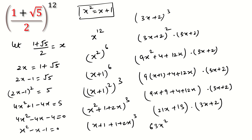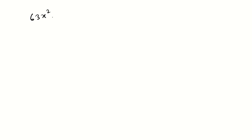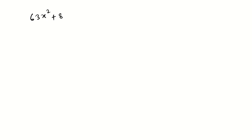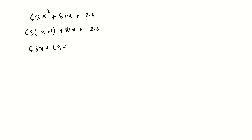Multiplying out: 21x × 3x = 63x², 21x × 2 = 42x, 13 × 3x = 39x, 13 × 2 = 26. This gives 63x² + 81x + 26. Substituting x² = x + 1: 63(x + 1) + 81x + 26 = 63x + 63 + 81x + 26 = 144x + 89.